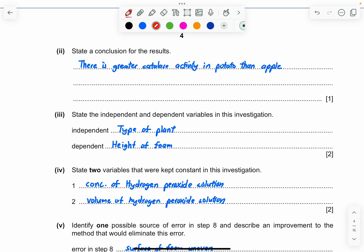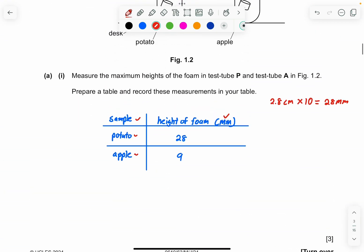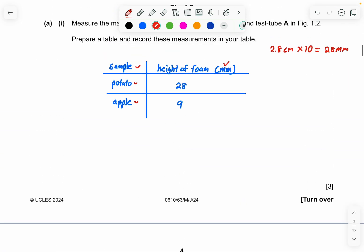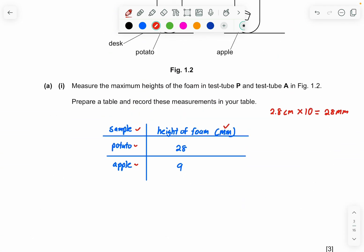Part two. State a conclusion for the results. So what you can see is that the potato has a greater catalase activity than apple. That's just it. Because the higher the foam, the maximum height of the foam is being given, it means that there's more catalase activity occurring.